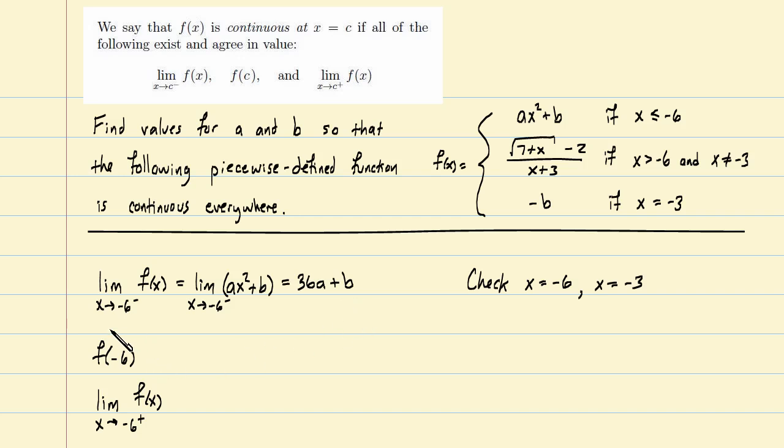Moving on to the second item here, f of negative 6. Again, which piece applies? Which one handles the case where x equals negative 6? Well, notice the equality option there. So again, it is the first piece. And we can simply plug in negative 6 for x to again arrive at 36a plus b. So far, things are looking pretty good. We want all three of these things to exist and agree in value. And these two certainly exist and agree in value. What about the third one?